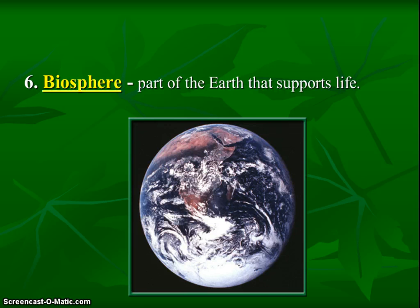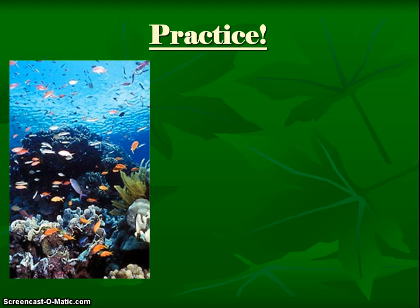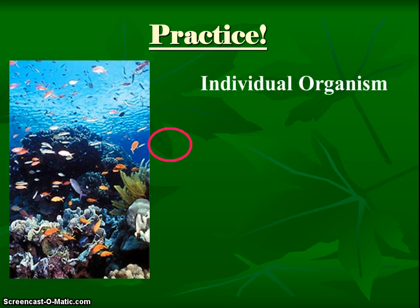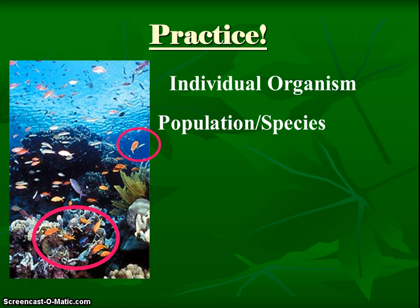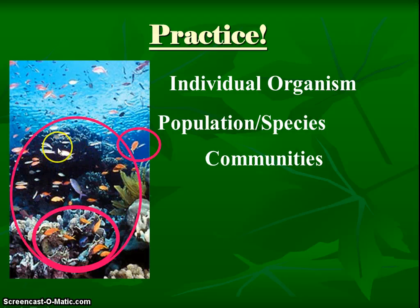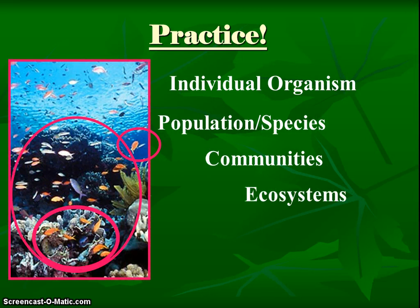That covers all of our different levels of ecological organization. Let's practice — instead of deer, we'll use fish. We started really small with a small individual organism, just like Nemo, one little fish. What came next after individual organism? Population — many fish of the same species; I'd only circle the orange-colored ones. After population came community: lots of fish and other living things, but they can be different species now. After community came ecosystems — now we're including sunlight, water, and rocks, because we can include abiotic things.